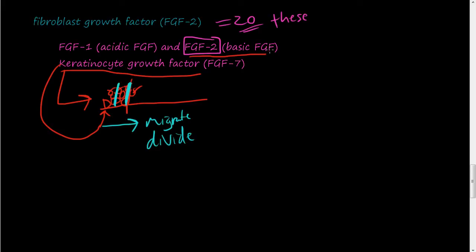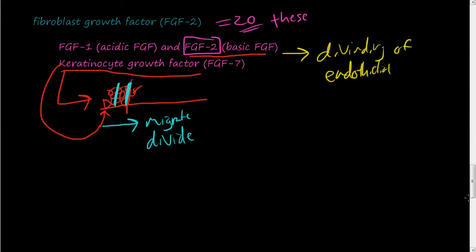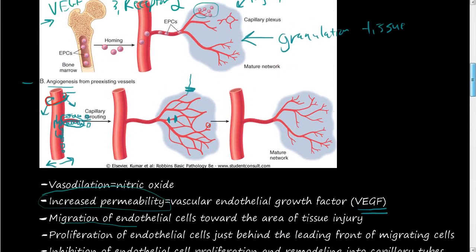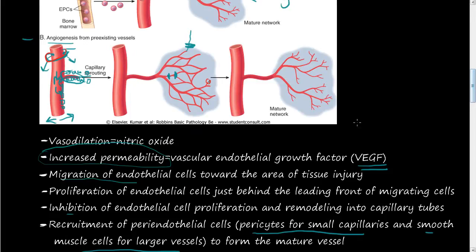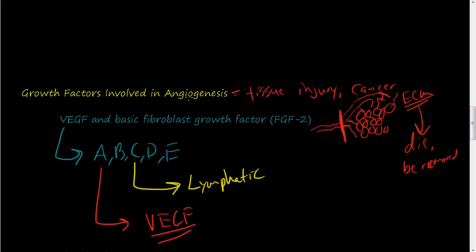FGF2, the basic fibroblast growth factor, causes the proliferation of endothelial cells. As these endothelial cells migrate out of the capillary sprouting tube, they start proliferating to create all the new blood vessel — and FGF2 is responsible for that. That wraps up our video about the growth factors involved in angiogenesis. We'll see you in the next video.